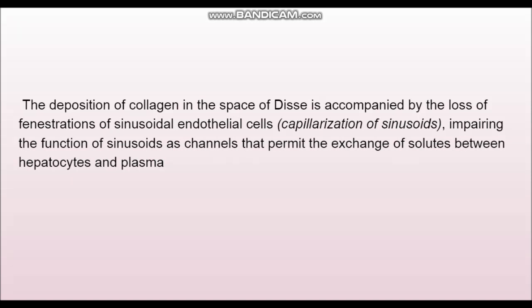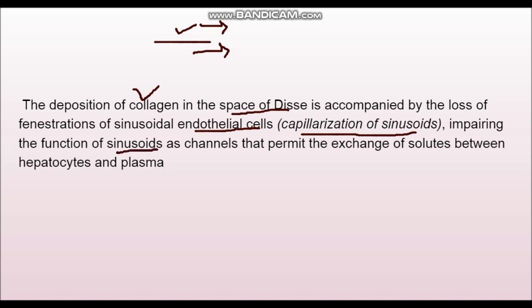Once activated, the stellate cell converts itself into a myofibroblast, increasing fibrogenicity and causing fibrosis. When collagen is deposited in the space of Disse, there is loss of fenestration of the endothelial cells — this is known as capillarization of sinusoids. Normally sinusoids are lined by discontinuous endothelial cells, but in cirrhosis this discontinuity is lost. This impairs the exchange of solutes between hepatocytes and plasma, which is the primary reason for metabolic dysfunction in cirrhosis.